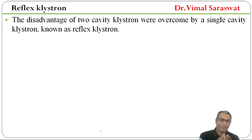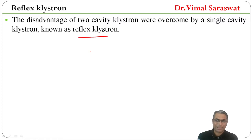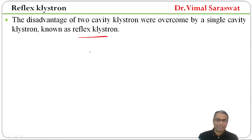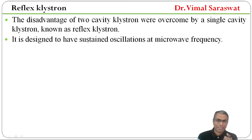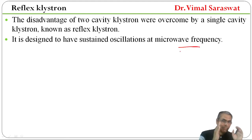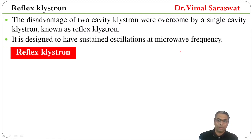The disadvantages of the 2-cavity klystron are overcome by a single cavity klystron known as the reflex klystron. So, these drawbacks are reduced or eliminated in the single cavity klystron, which we call reflex klystron. Reflex klystron is actually a single cavity klystron, and it is designed to have sustained oscillations at microwave frequency.